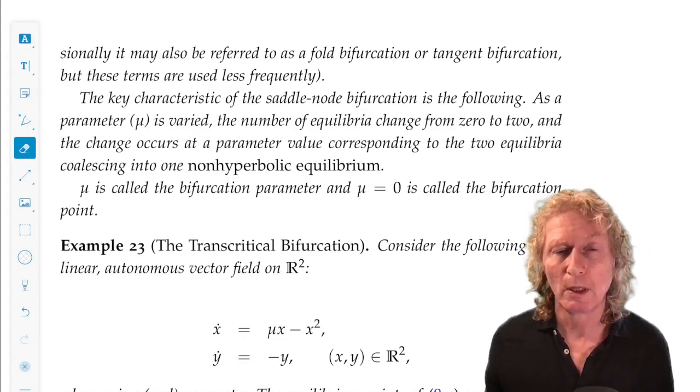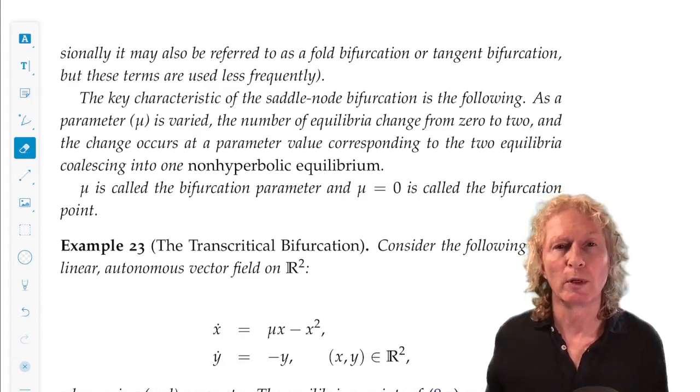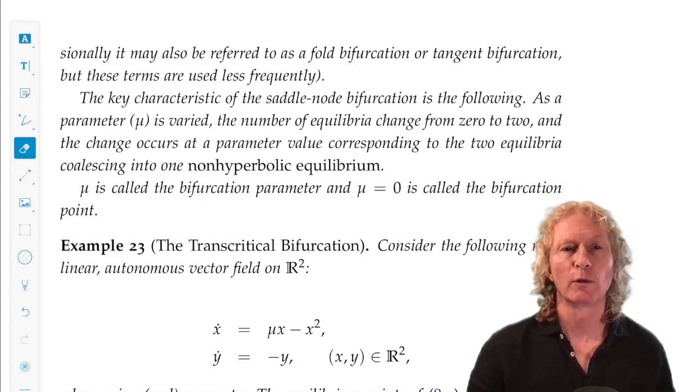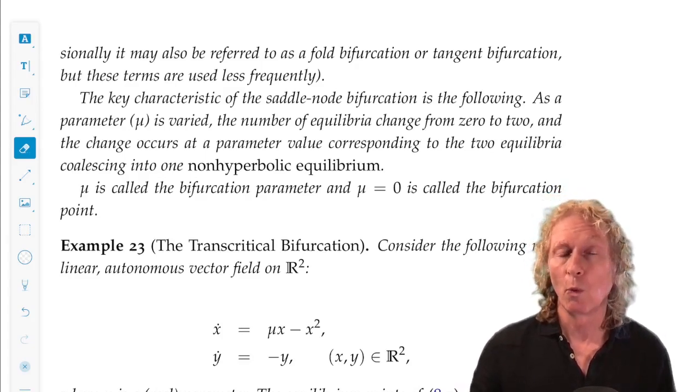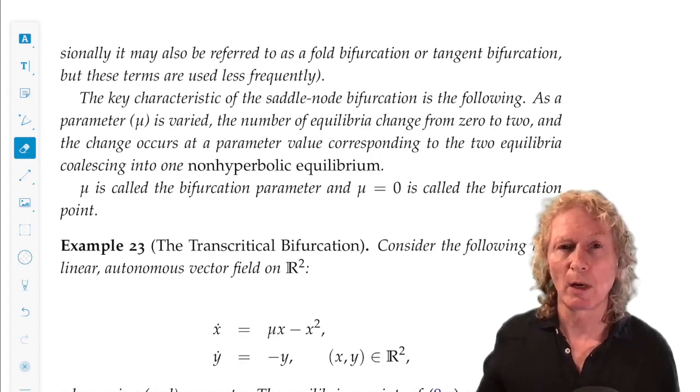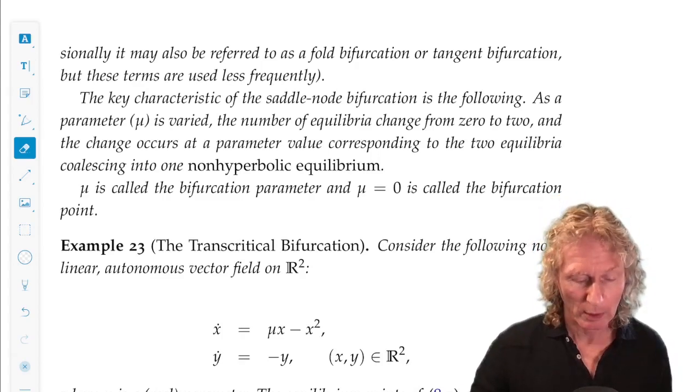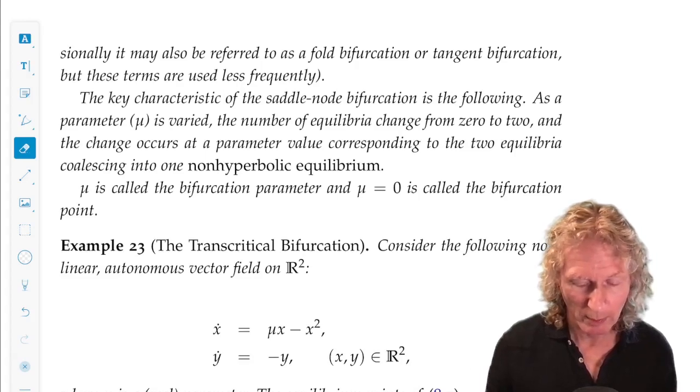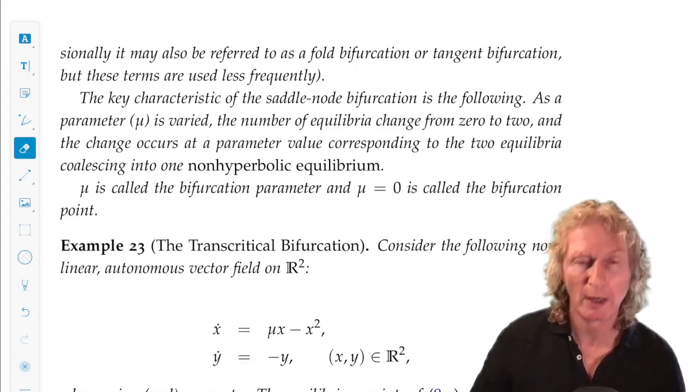which is a non-hyperbolic equilibrium point. And in that case, you go from zero to one non-hyperbolic to two hyperbolic. We call mu the bifurcation parameter, and mu equals zero is called a bifurcation point.